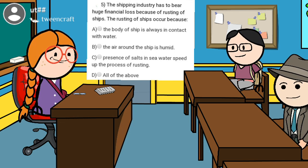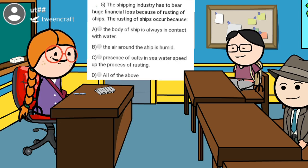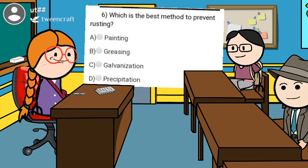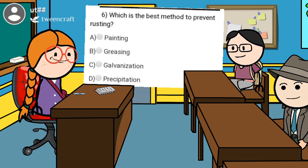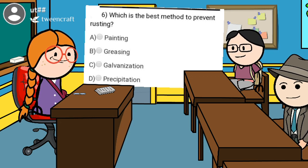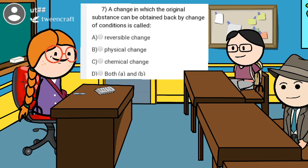Our sixth question is about methods to prevent rusting. Option A: painting; option B: greasing; option C: galvanizing; option D: precipitation. Sam, the answer is option C — galvanization. You are correct.